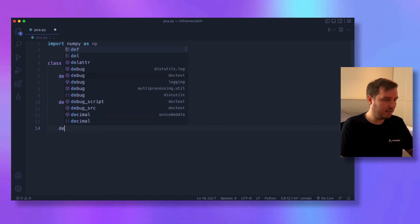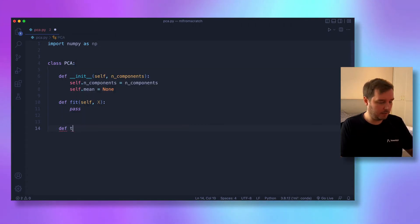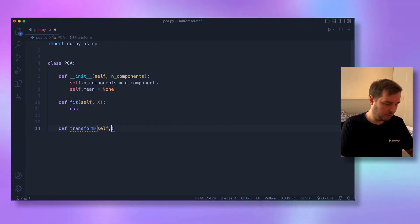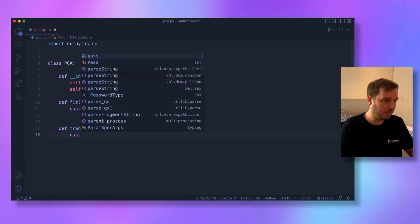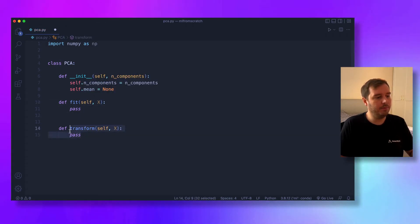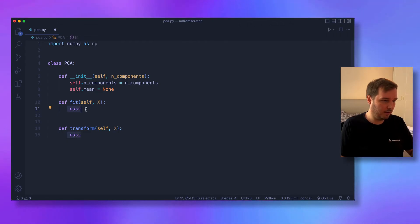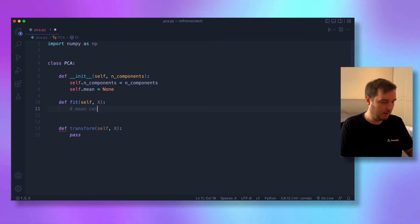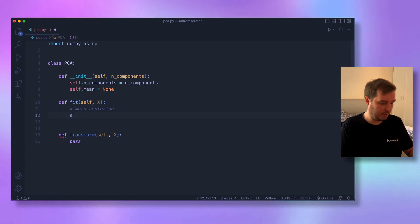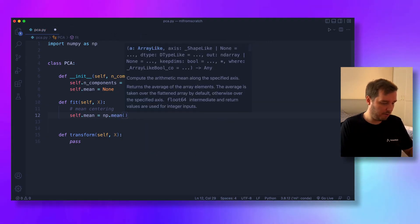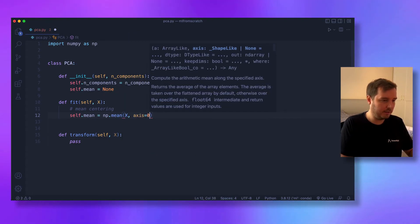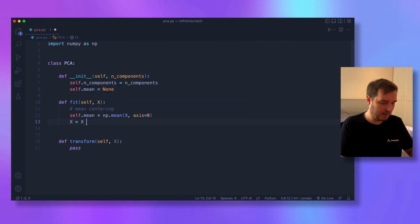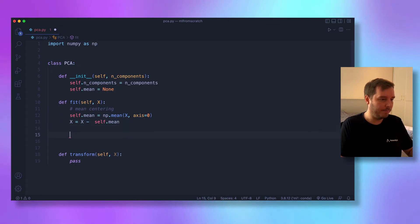We don't call the second method predict, but rather transform. It also gets self and X. This could be the same data or new testing data. Now let's start with fit. The first thing we do is mean centering—we subtract the mean. We say self.mean = np.mean(X, axis=0), and then X = X - self.mean.